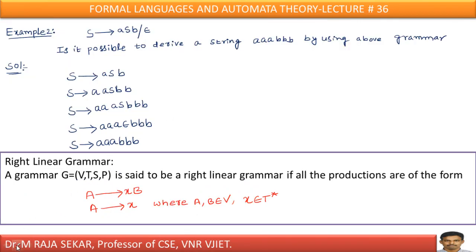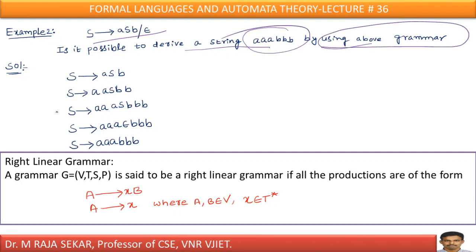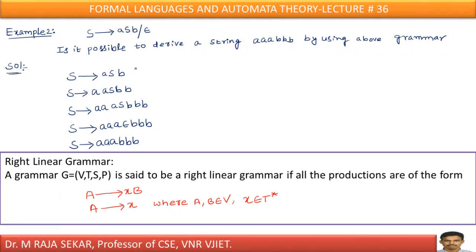Let me consider one more simple example. S goes to small a, capital S, small b — and S goes to epsilon. We have two productions. Is it possible to derive the string triple-a triple-b using this grammar? Yes. We will try to check whether it is possible to generate this particular string. S goes to aSb.